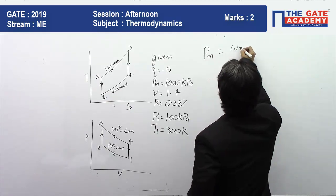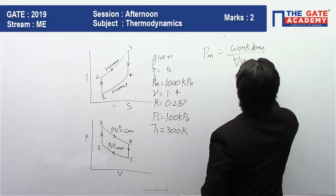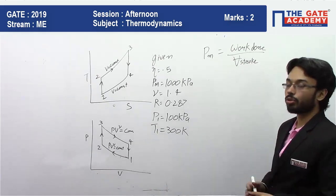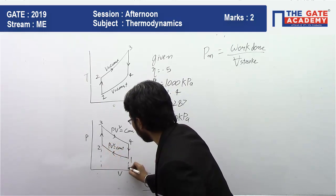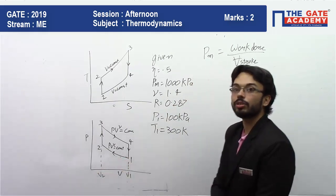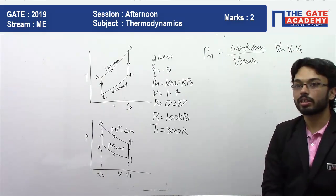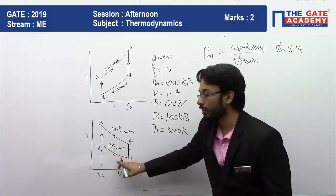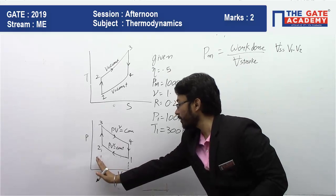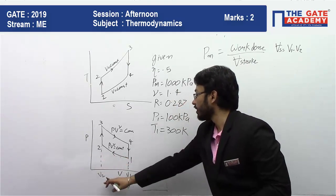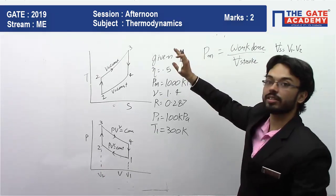From the mean effective pressure, we use the formula: mean effective pressure = work done divided by stroke volume. Stroke volume is V1 minus V2, which you can see from the diagram since V1 is greater than V2. The stroke volume represents how much the piston moves — it travels from V2 to V1 and back.